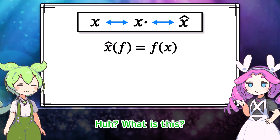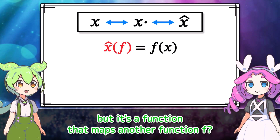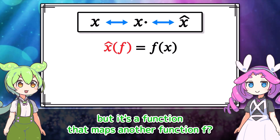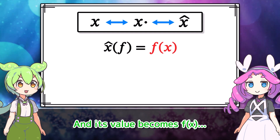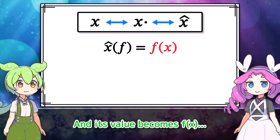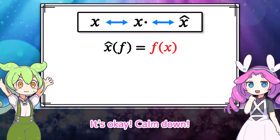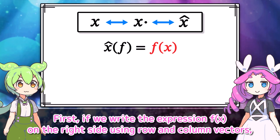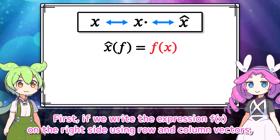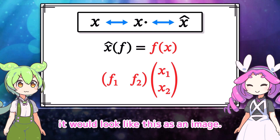Here's what the answer looks like. What is this? x-hat looks like a function, but it's a function that maps another function f, and that way becomes f(x). x-hat of f on the left side is applying the function x-hat to the vector f. If we write the expression f(x) on the right side using row and column vectors, it would look like this as an image.